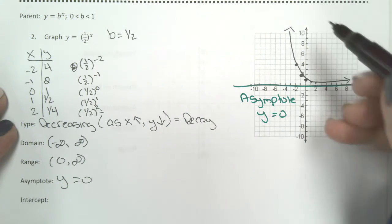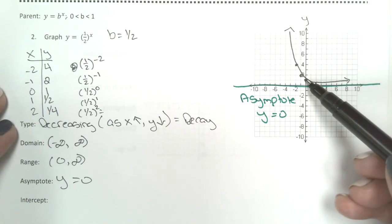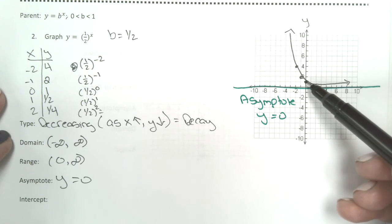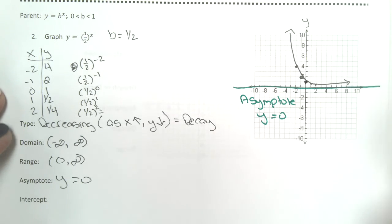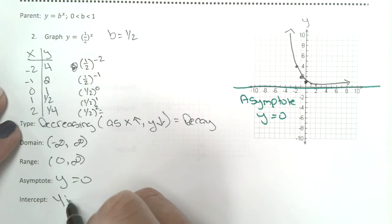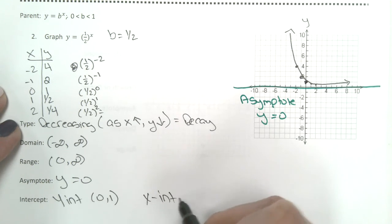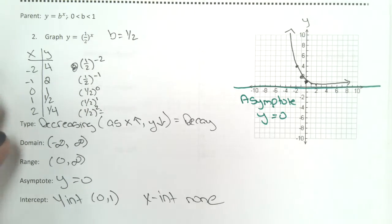And on all of these parent functions, you will always have a y-intercept right here at 0, 1. x-intercept is none because you have an asymptote and it can't do that.